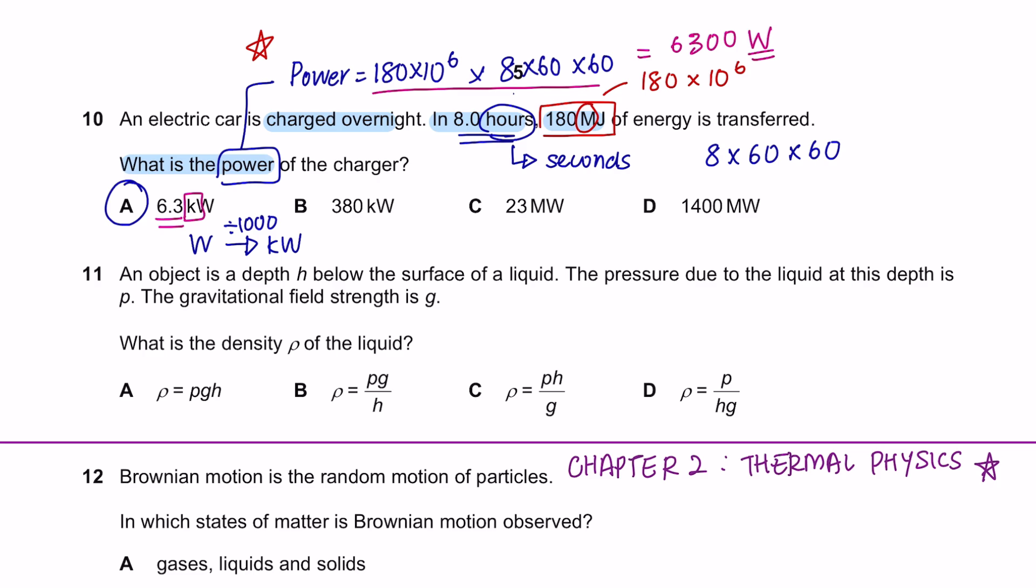Question 11. An object is at a depth H below the surface of a liquid. The pressure due to the liquid at this depth is P. The gravitational field strength is G. What is the density rho of the liquid? So this is quite simple. We just need to rearrange the formula of pressure in liquid. Pressure due to liquid formula is the height of the object below the surface of the liquid times the density of the liquid times gravitational potential energy. And we want to find what is rho. We'll just rearrange this, bringing it to the other side. I would get the pressure of liquid, which is P, over H times G. So the answer here is D.